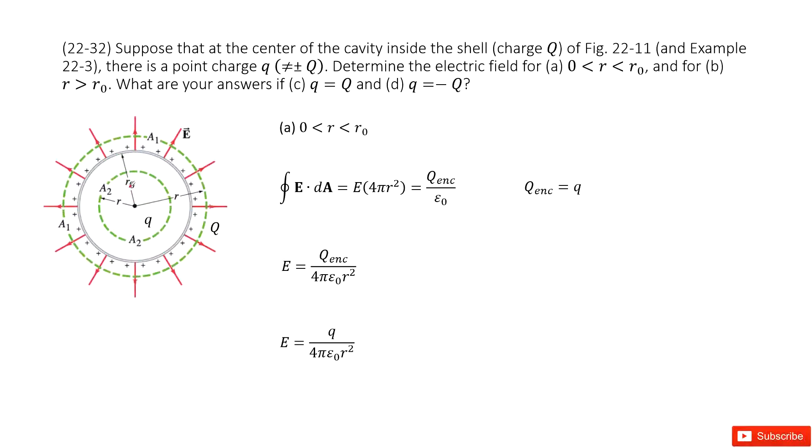Now we need to find the electric field at different locations. The first location is r smaller than R0, so we can draw a Gaussian surface as shown here - this green circle as the Gaussian surface.